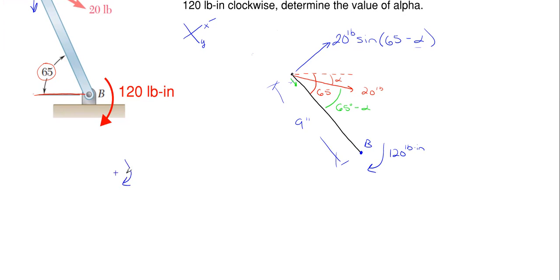So if we take clockwise summation of moments about point B, this is what it has to be. We would have our force of 20 pounds times the sine of 65 degrees minus alpha. That would be my total force. And my perpendicular distance would be the length of the lever arm since that's the way I have my force set up, would be nine inches has to be equal to 120 pound inches of moment.